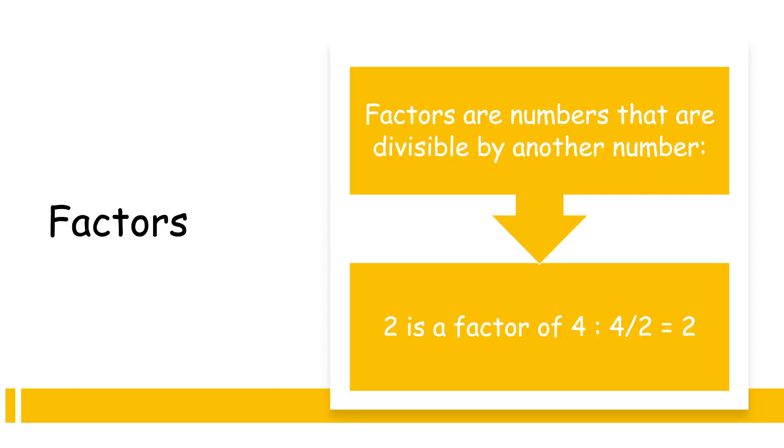Factors. Now, this is a very important part of factorization because factorization has that word factors. So you first need to know what are factors in order to figure out the factors of an expression. Now let's not get into that just yet, let's look into factors first. Factors are numbers that are divisible by another number. 2 is a factor of 4. Why? Because 4 by 2 is equal to 2.